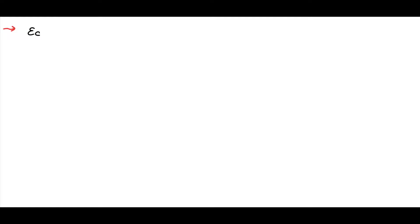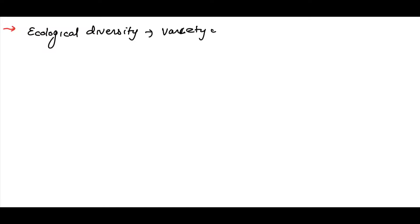The last level is ecological diversity. If we are talking about ecological diversity, we talk about the variety of ecosystems in an area of study. For example, in India there are different ecosystems present.